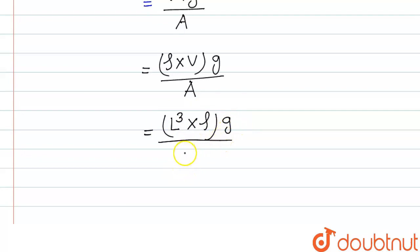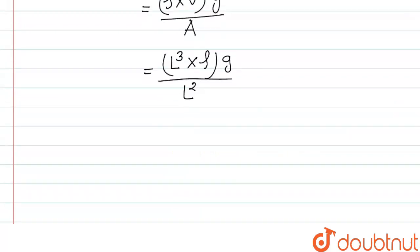Now, the area will be L squared. So here we see that this will cancel the L squared, so this will be L, then density and the acceleration due to gravity.